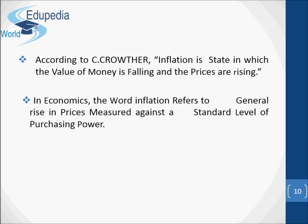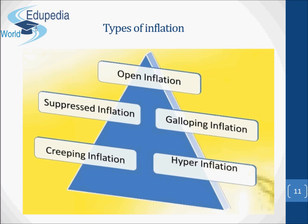According to Crowther, inflation is a state in which the value of money is falling and prices are rising. In economics, the word inflation refers to a general rise in prices measured against a standard level of purchasing power. There are several types of inflation: open inflation, suppressed inflation, galloping inflation, creeping inflation, and hyperinflation.